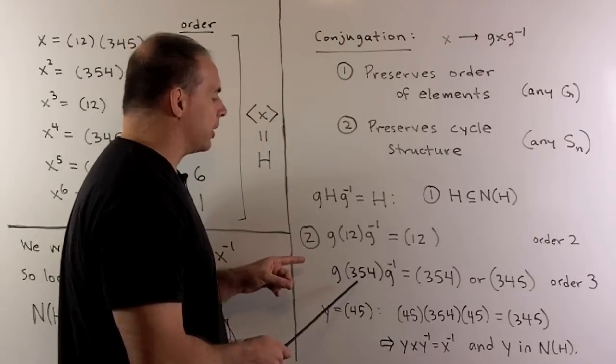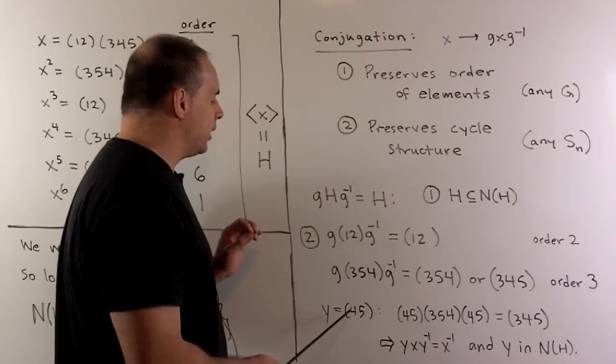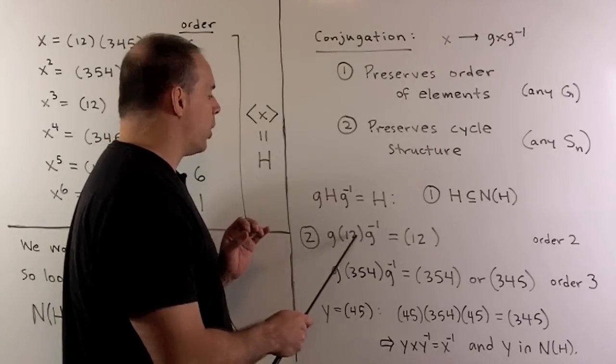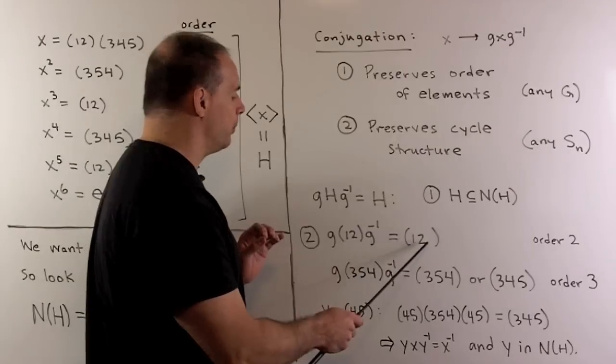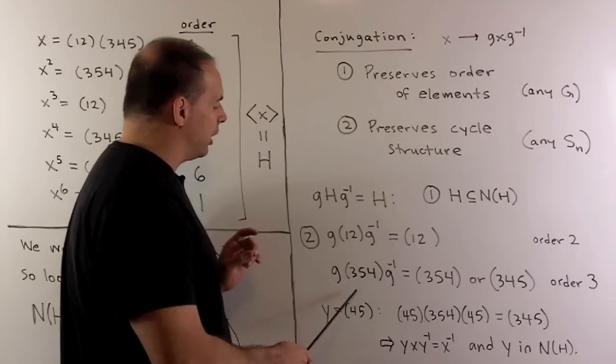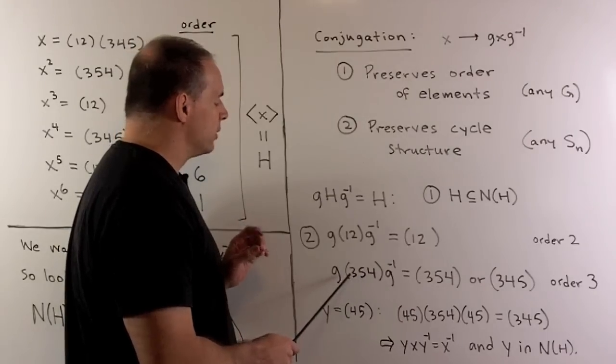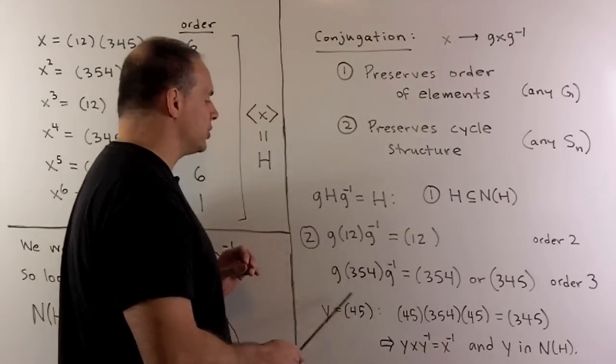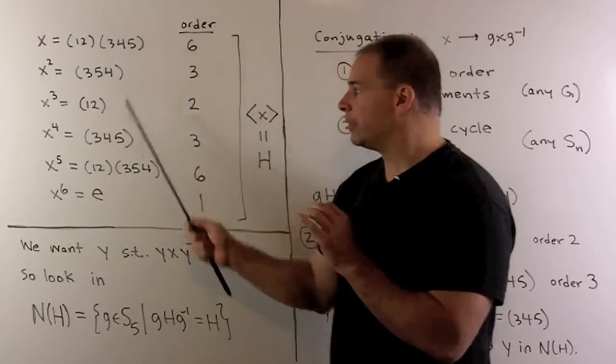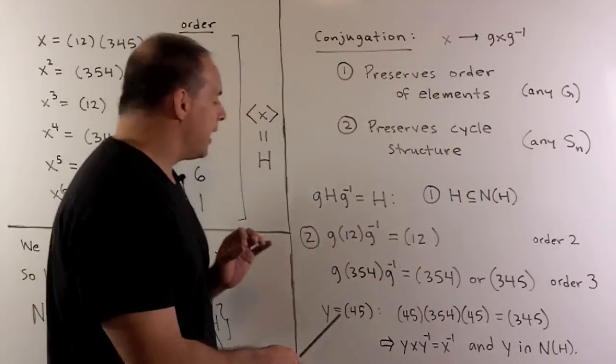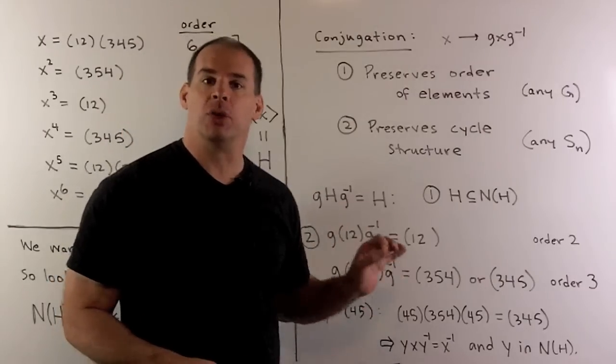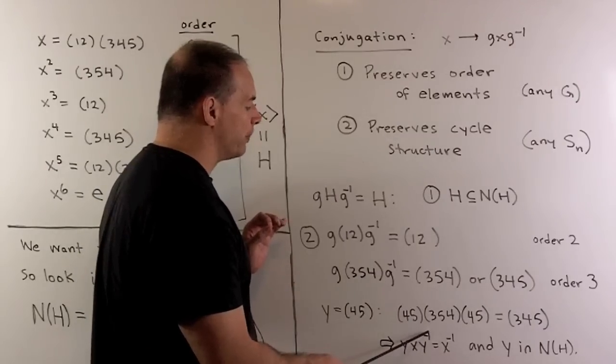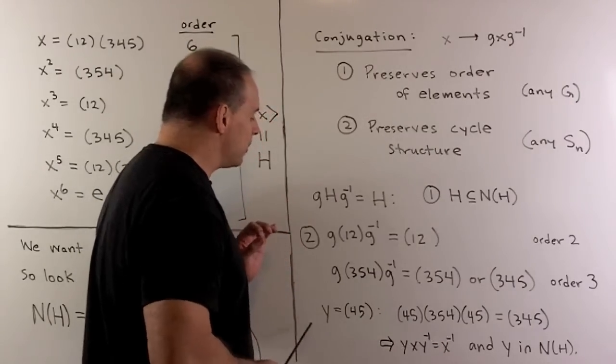Now if we look at these two properties, we note I can use Y equal to (4,5) for a G. If you note, (4,5) is disjoint from (1,2), so the G just passes through to give us (1,2). In this conjugation here, we're just going to switch the 4 and the 5, so it's going to carry (3,5,4) to (3,4,5). Because these two elements generate our H, we see that this Y is going to normalize H, so Y is in the normalizer of H. We also see that if I compute Y, X, Y inverse, we get X inverse back, so this is going to be the element that I'm looking for.